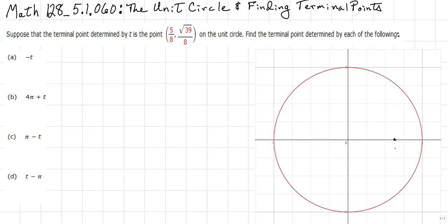For the square root of 39 over 8, that's approximately 0.7806. Going up on the y-axis, 0.5 is here and 0.75 is here, so 0.78 is just a little bit above that. That means my ordered pair is right about here on the unit circle: (5/8, √39/8). This point T will have an angle associated with it.